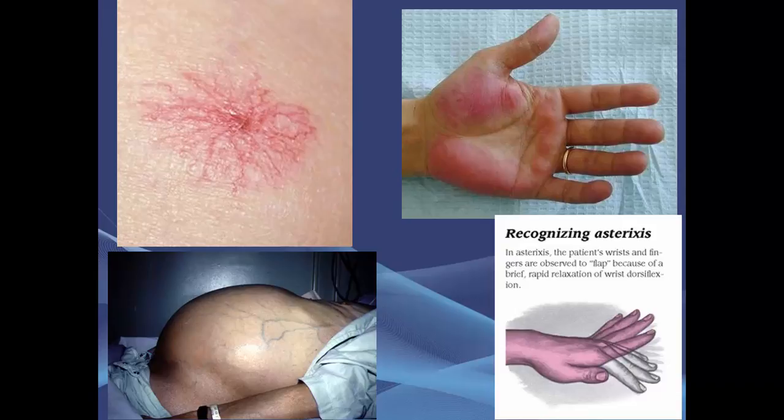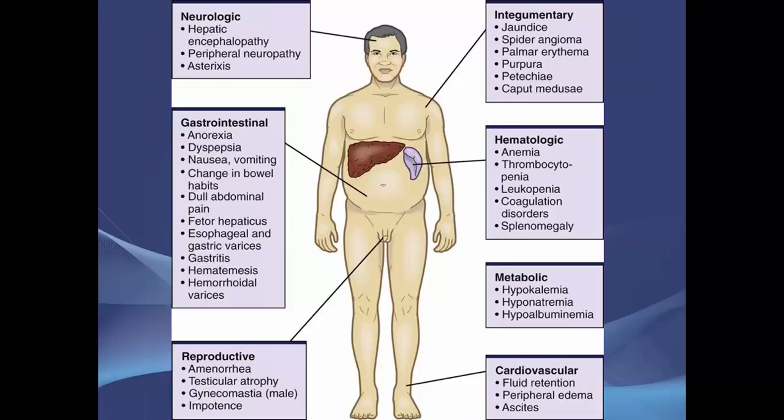Asterixis — also called a liver flap — is one manifestation visible in liver disease; it refers to a tremor-like flapping movement of the hands. Slides also show the different manifestations according to body system affected. You can see the spider angioma on the skin, which looks like a big spider web, and palmar erythema — redness of the palms.